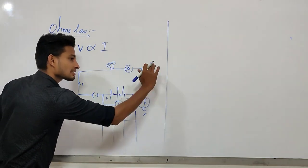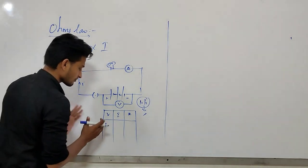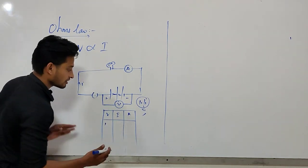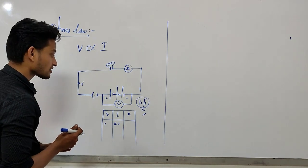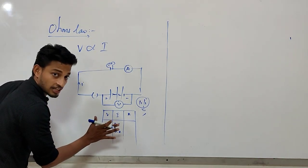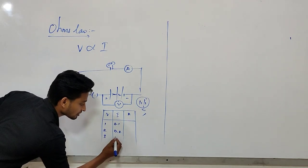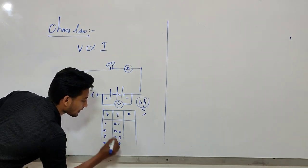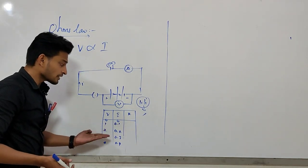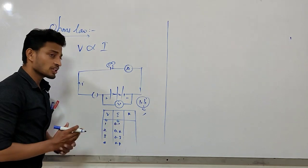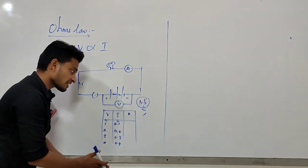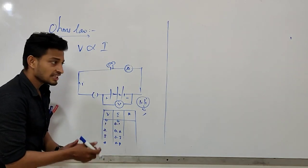With 1 volt, the current is 0.1 amperes. With 2 volt, the current is 0.2 amperes. With 3 volt, the current is 0.3 amperes. With 4 volt, the current is 0.4 amperes. As the potential increases, the current also increases. That is what we call resistance — the potential difference across a conductor is directly proportional to the current.